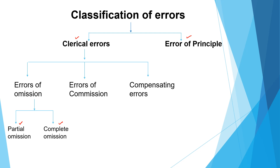Finally we have compensating errors. There might be multiple errors committed by the clerk, and those errors might be such that some of them total up to a debit excess while certain other errors total up to a credit excess, and those two might ultimately be the same amount. For example, a debit excess of 1000 and a credit excess of 1000 relating to two or three different transactions would cause the trial balance to tally because the errors on the debit and credit sides are compensating each other. These types of errors are also classified as clerical errors.